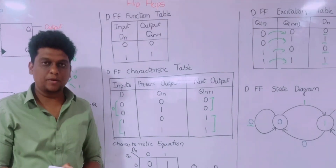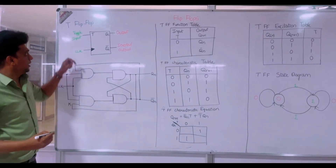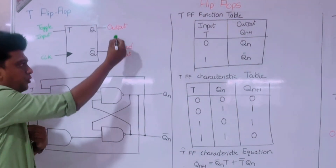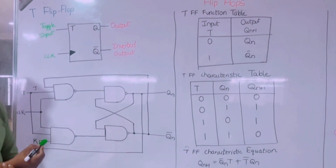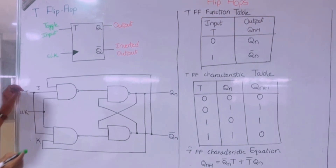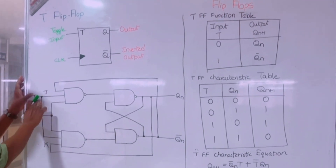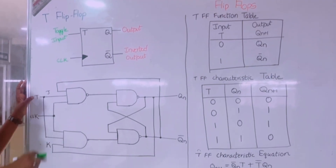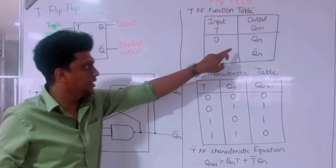Now we come to the T flip-flop, which we call the toggle flip-flop. Here we are providing the toggle input, and this is the clock pulse. We are getting output Q and the inverted output Q-bar. The toggle flip-flop is a modified version of the JK flip-flop. Instead of separate inputs J and K, we are using the common input T.